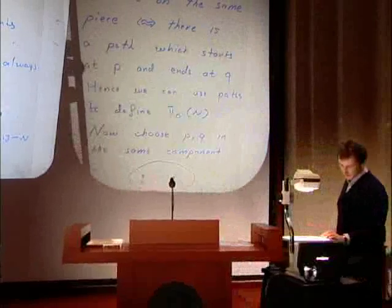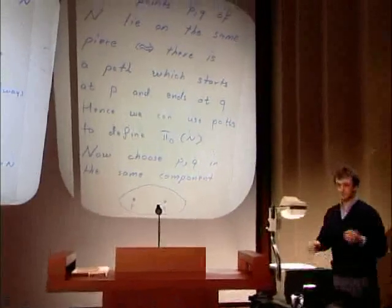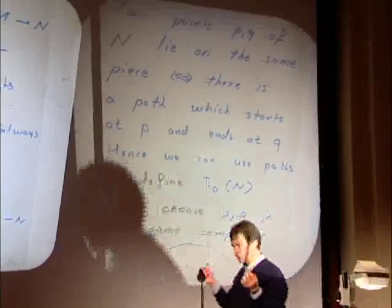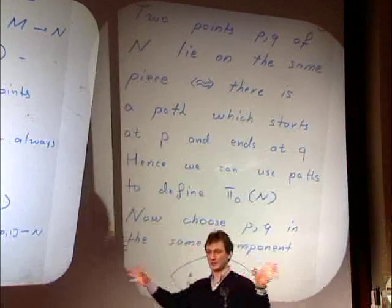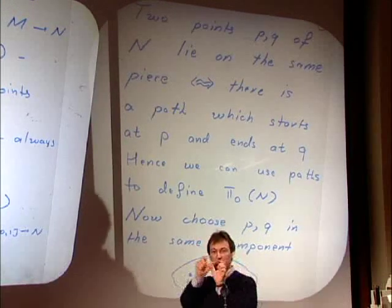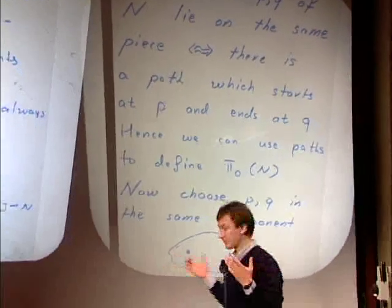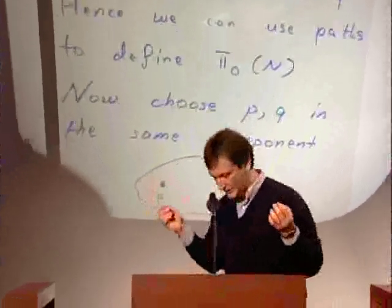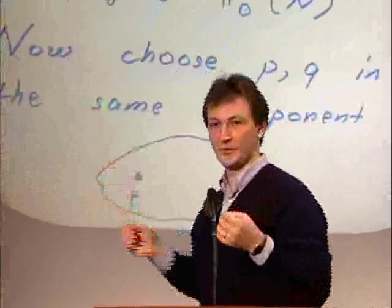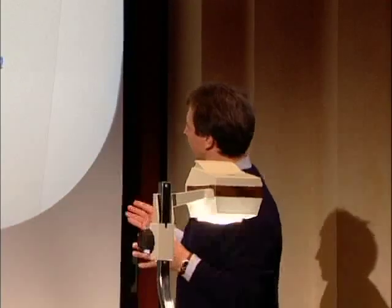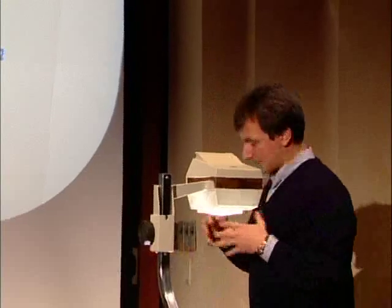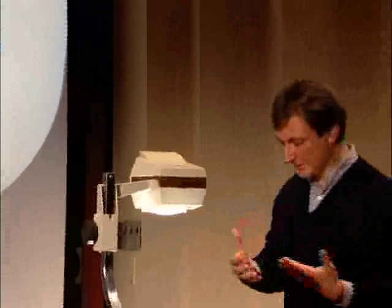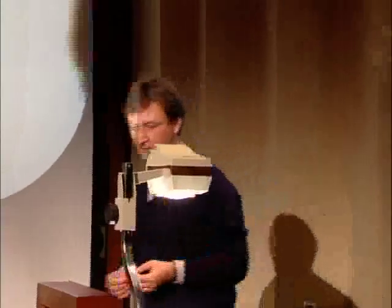Let's go back to the notion of the number of pieces of a space. How can we say formally when two points lie in the same piece? If they lie in the same piece, they can be connected by a path. If they lie in different pieces, there is no way to find a path without breaks connecting them. To define what it means for two points to belong to the same piece, one can use the notion of a path — a continuous map from the interval to the space. The only thing needed to define pi-zero is to know what are points and what are paths between them.